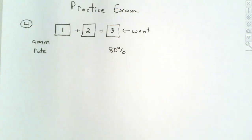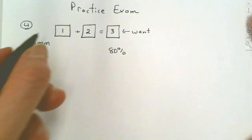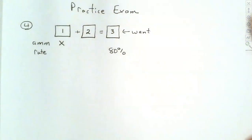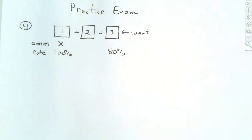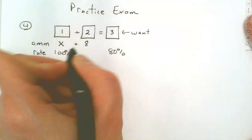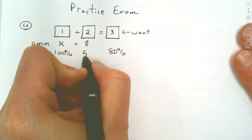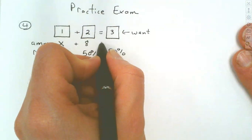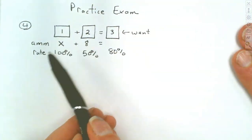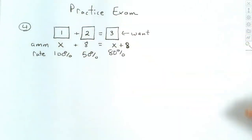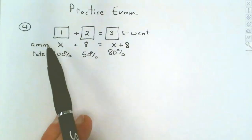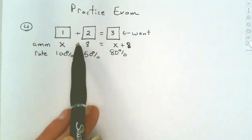It says how much pure acid, so we don't know how much — that's going to be the unknown X in box one. The concentration of pure acid is 100%, so we use 100% there. We're going to mix that with eight gallons of a 50% solution. What goes on the right for the amounts is these add together, so that's going to be X plus 8, because one plus two gives you three — the amounts add across.